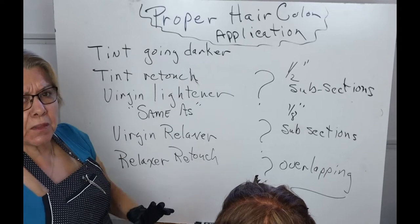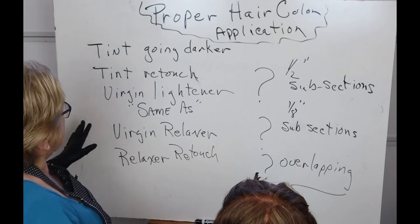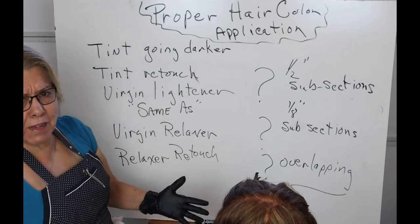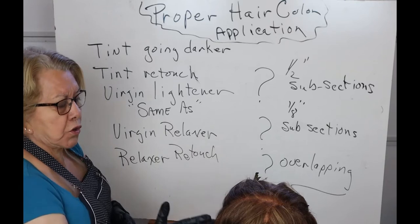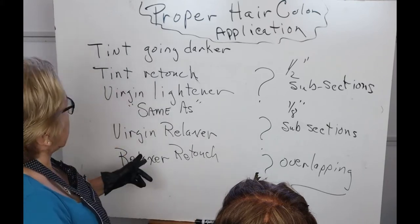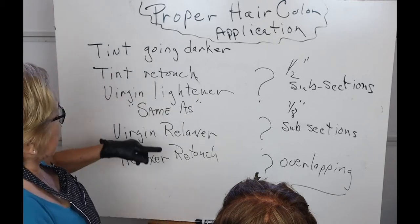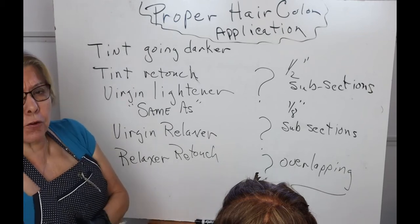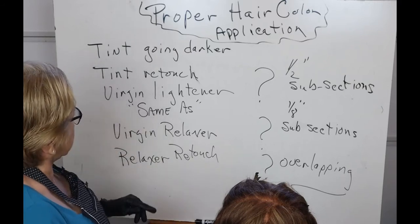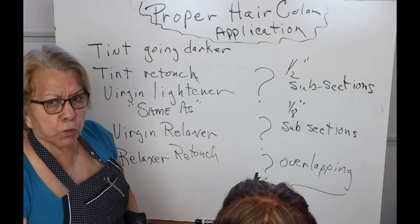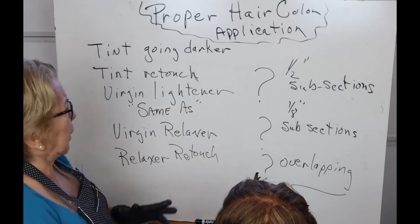You have different application types: tint going darker, tint going lighter, and virgin lightener — these are just certain names, but they're really about procedures and applications depending on where you are and where you need to go. Today we're going to do a virgin lightener application first, then on another section we'll do a retouch, and we'll also cover tint going darker.